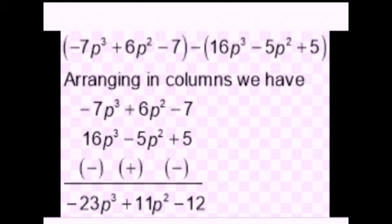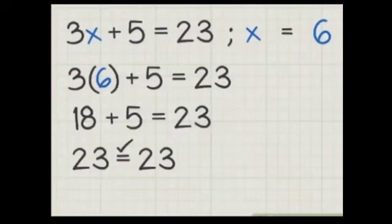Minus 7 minus 5, both are same sign, so we add minus 12. Plus 6 plus 5p², both are same sign. We add 6 plus 5, 11p². Minus 7p³ minus 16p³, both are same sign, so we add minus 23p³ is the answer. After solving the addition and subtraction of algebraic expression, now we solve the sums of find the value of algebraic expression.